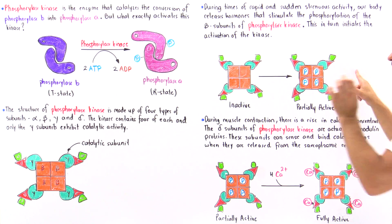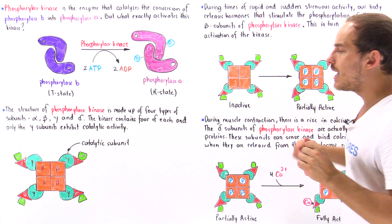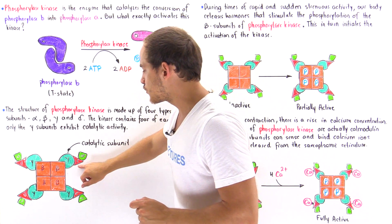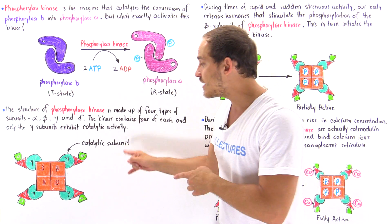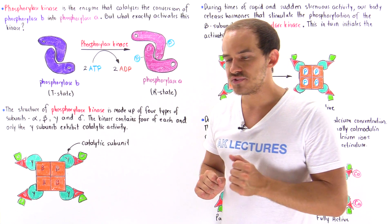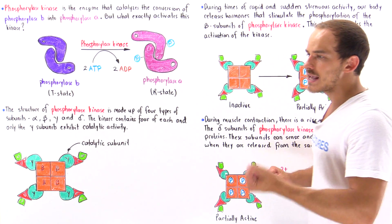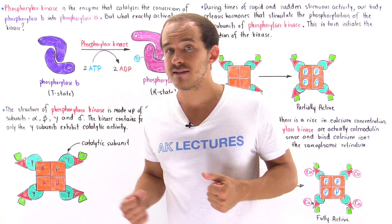These red structures are the delta structures, and the delta structures are actually calmodulin proteins. Remember that calmodulin is a protein that senses calcium ions. It can bind calcium ions.